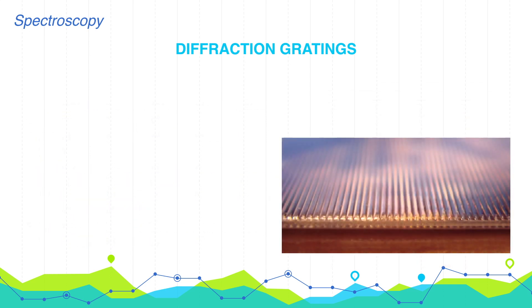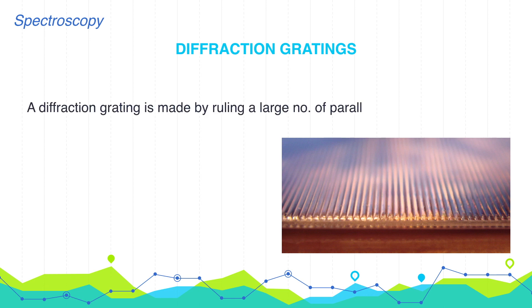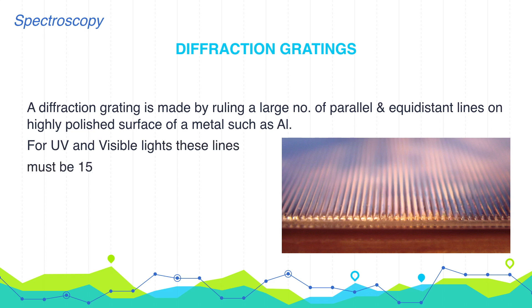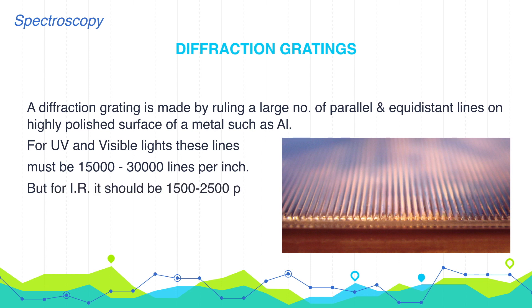A diffraction grating is made by ruling a large number of parallel and equidistant lines on a highly polished surface of a metal such as aluminium. For UV and visible light, these lines must be 15,000 to 30,000 lines per inch. But for IR, it should be 1,500 to 2,500 lines per inch.